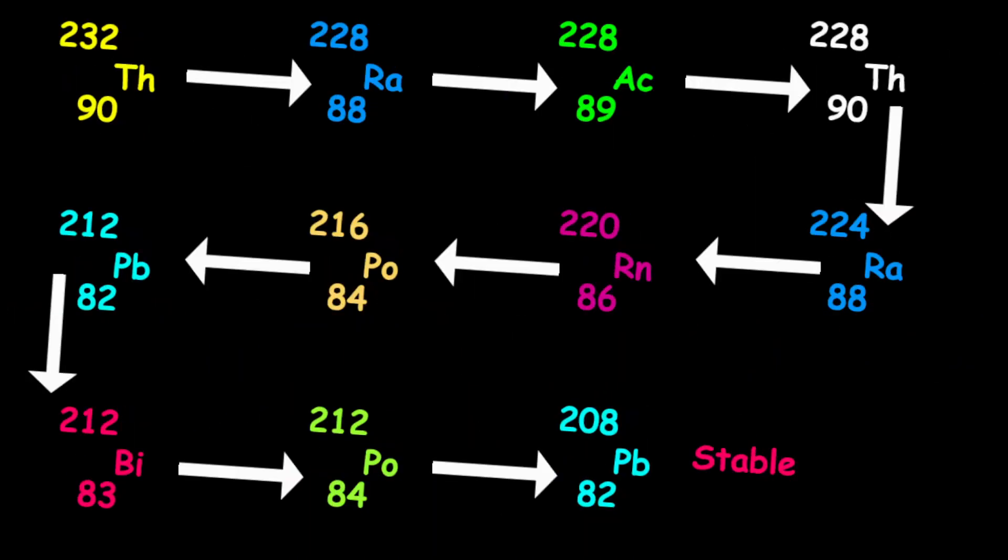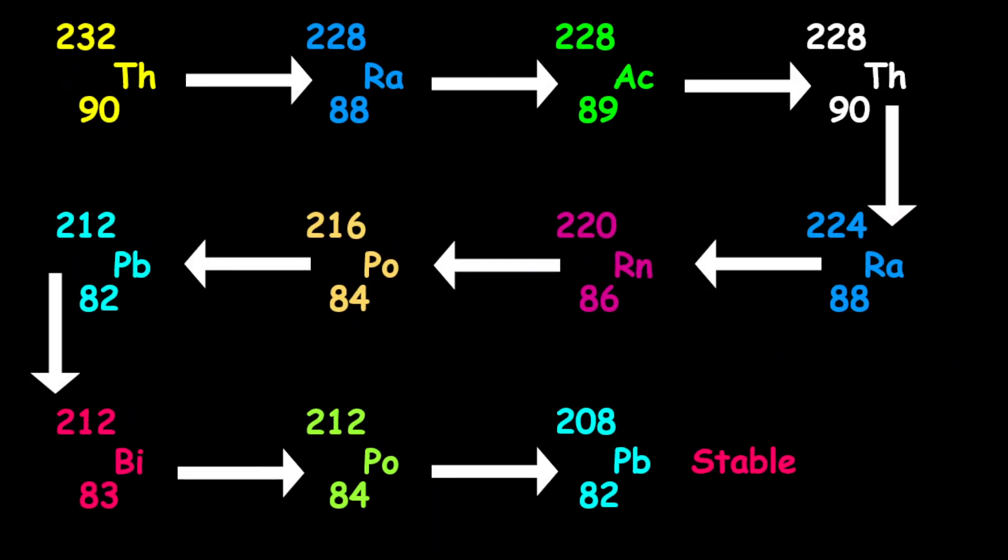What we have here is an outline of the decay series, starting with thorium-232, which is unstable, ending with lead-208, which is stable. We're going to go through each decay and explain what type of decay each is.